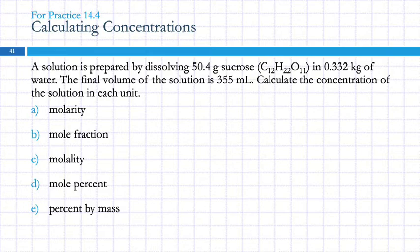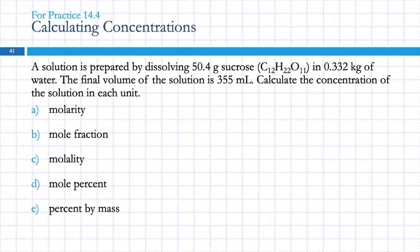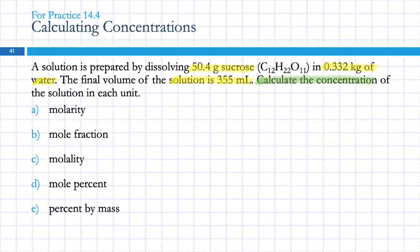A solution is prepared by dissolving 50.4 grams of sucrose in 0.332 kilograms of water. The final volume of the solution is 355 milliliters. Calculate the concentration of the solution in each unit. If you're calculating a concentration, you're going to use an equation. If you've got the concentration and you're using it to calculate mass of solute or volume of solution, then you're doing dimensional analysis — just like with density.